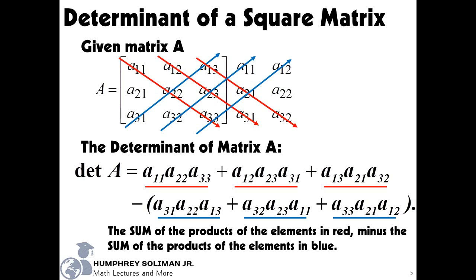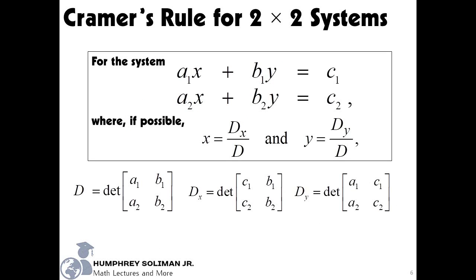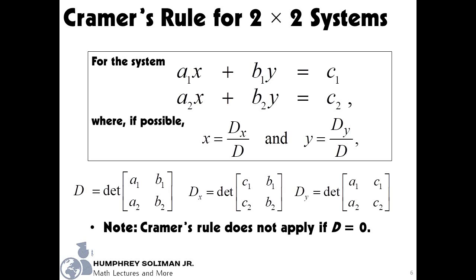To use the determinants in solving systems of linear equations, we will discuss Cramer's rule. For the given system, the solution is x equals dx over d, and y equals dy over d. Please note that Cramer's rule does not apply if d equals zero, because division by zero is undefined. Also, dx is the determinant of the given system but the column for the coefficients of x were replaced by the constants of the equations c1 and c2. It follows that dy is the determinant of the given system but the column for the coefficients of y were replaced by the constants of the equations c1 and c2.